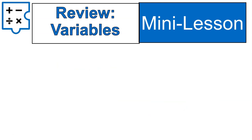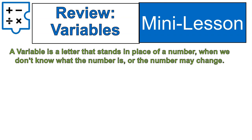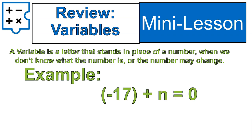Now we're going to move into talking about variables. A variable is a letter — it stands in place of a number. If we're not sure what the number is, or if the number might change, we put in a letter instead. Here's an example: negative 17 plus a number is equal to zero. We just did this question, where we know that number is equal to 17, because negative 17 plus 17 equals zero. We'd write this as n is equal to 17.